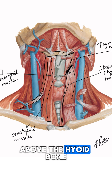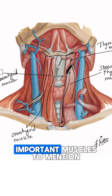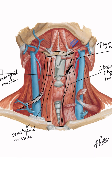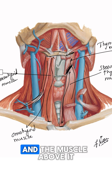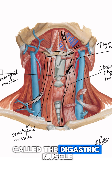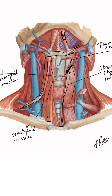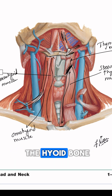Above the hyoid bone, there are two important muscles to mention. The mylohyoid muscle is present on both sides, and above it is the digastric muscle, which has a belly in the middle and is hooked into the hyoid bone.